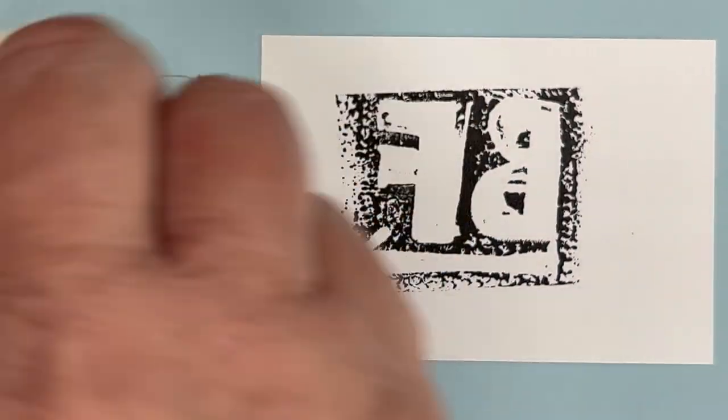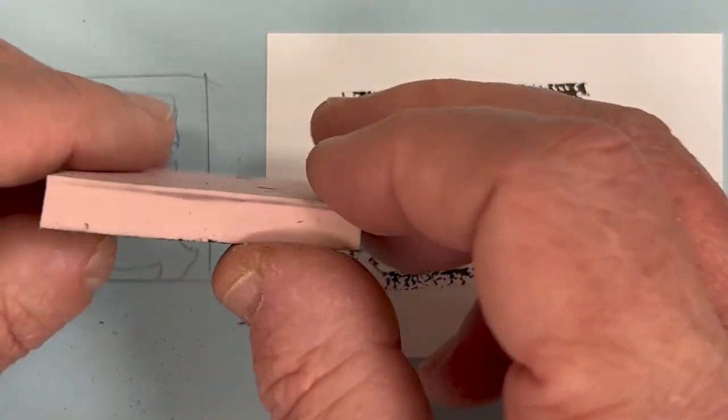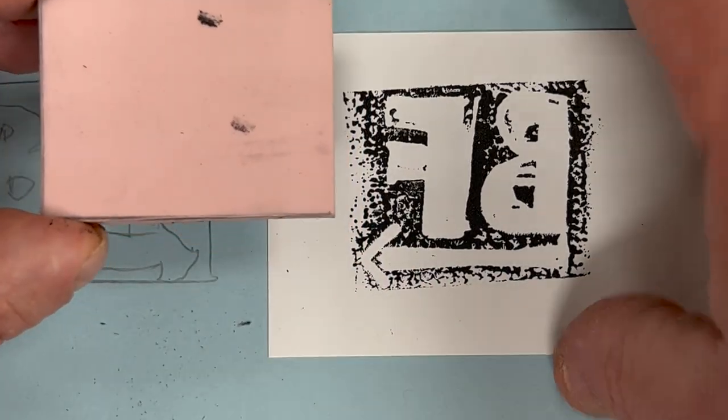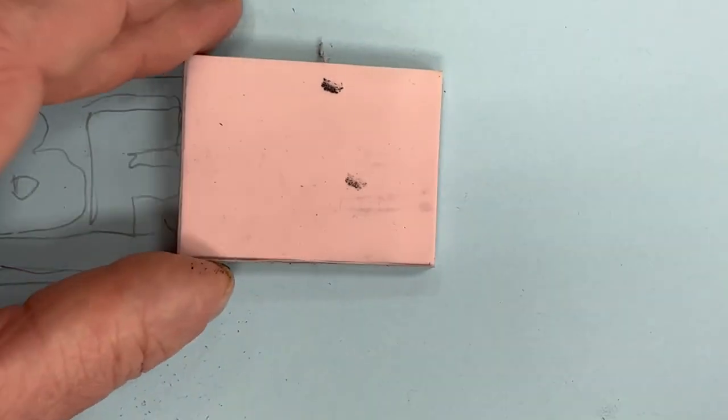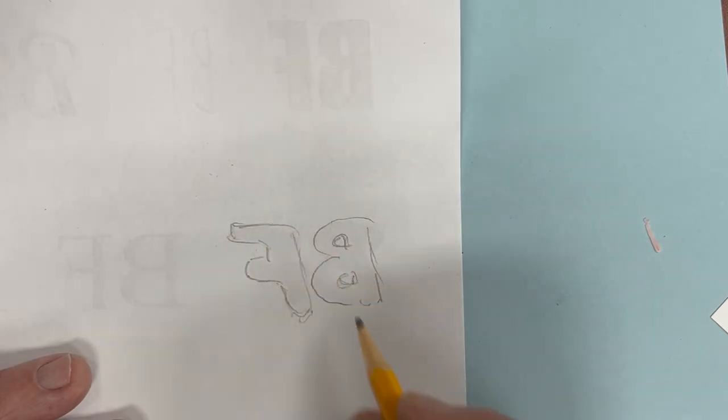Fortunately, I can flip the rubber material over and make a new stamp there. Actually, I could make narrow stamps on the four edges too. Six stamps out of one block. This time, I'll make sure to reverse my letters and carve away the background, the part I want to be white.